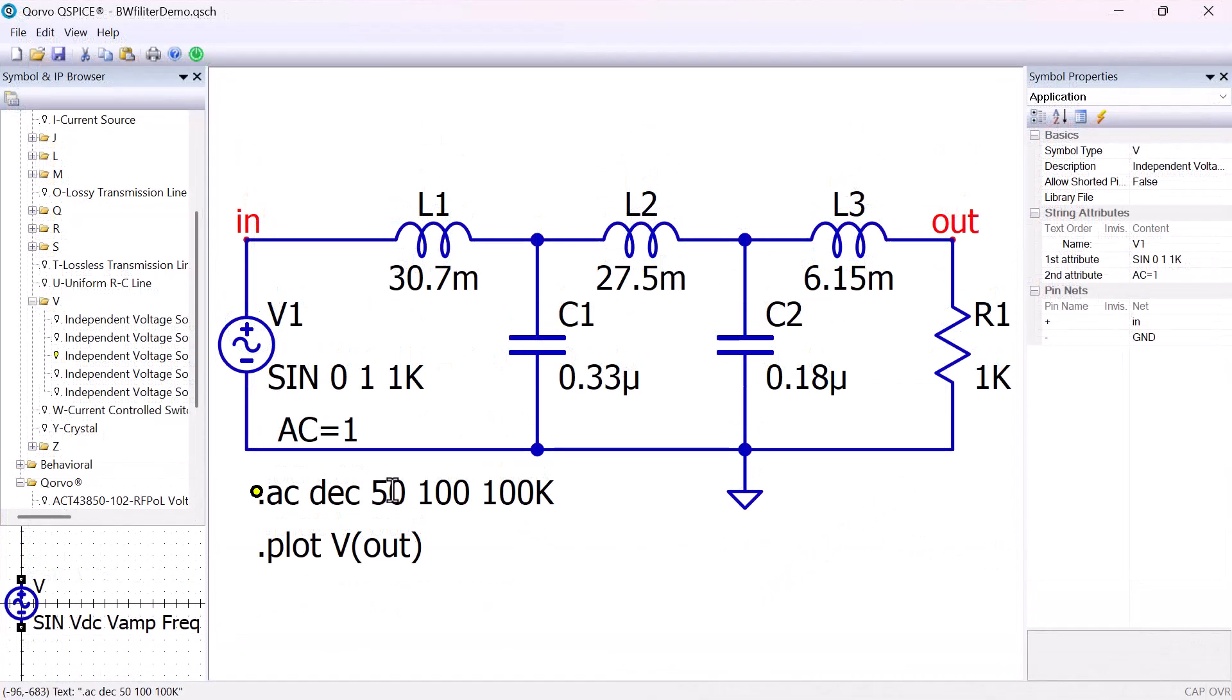The sine wave source is a time domain source. We can change the simulation type from small signal AC to a transient time domain simulation. Double click to modify the AC simulation command line.